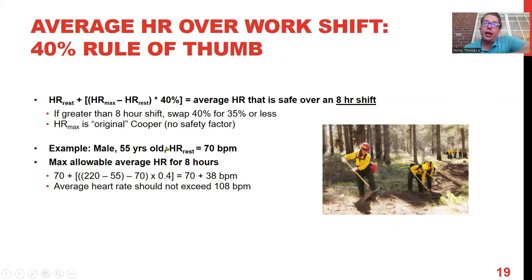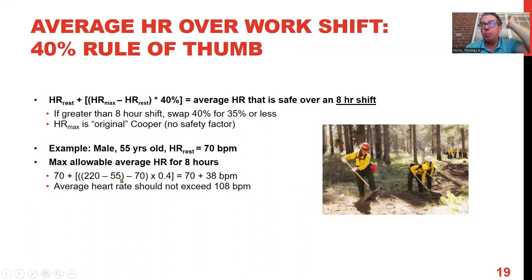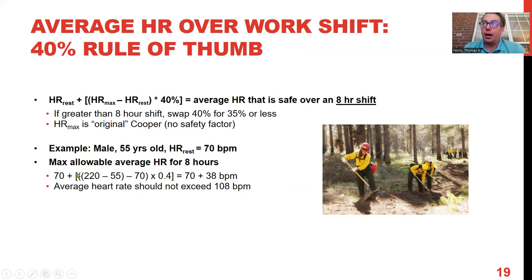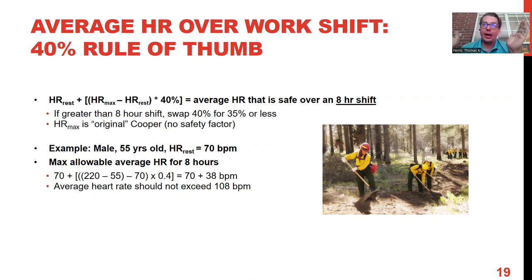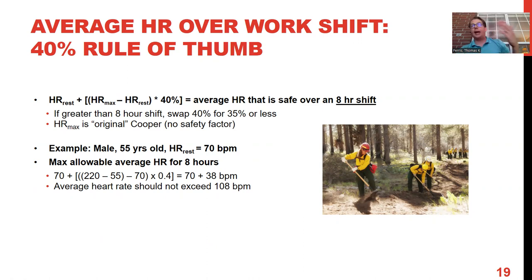Example: a 55-year-old male with resting heart rate of 70 bpm. HR_max = 220 − 55 = 165. Then: 70 + 0.40 × (165 − 70) = 70 + 0.40 × 95 = 70 + 38 = 108 beats per minute. If you capture heart rate over an entire eight-hour shift and the mean exceeds 108, that means the worker is working too hard — modify the job, give more rest time, find a different tool, or add more people.